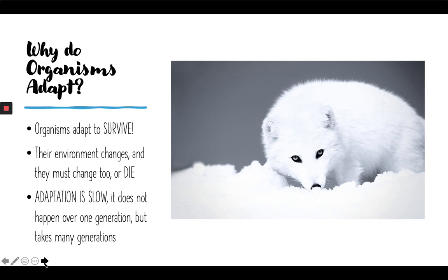When we learn about the different changes that happen to environments — both long-term and short-term — we can see how those affect the things that live there. For example, a really devastating short-term change, such as an entire forest burning down, probably wouldn't lead to adaptation because it's not a long-term change. However, a long-term climate change where an environment gets colder and colder over many generations would cause organisms to adapt to survive that colder environment.